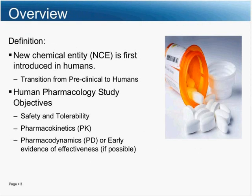So a little bit of an overview. For the term new chemical entity, or NCE, this is when a compound is first introduced into human subjects. Typically what we're doing is transitioning from nonclinical to human studies. Before we get into humans, we have to look at any compound in animals first. We do extensive nonclinical testing in different animal species, different routes of administration, different timing, and a lot of different dosages to try and determine what would be a safe therapeutic dose, or at least to get a range so that we can go into a clinical trial in humans.